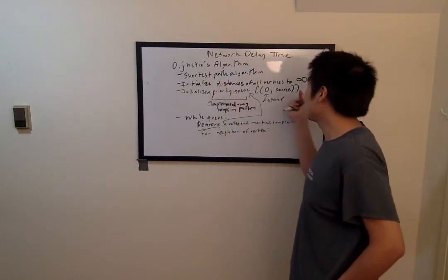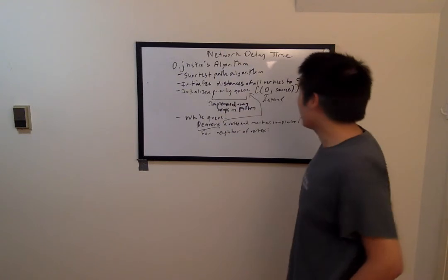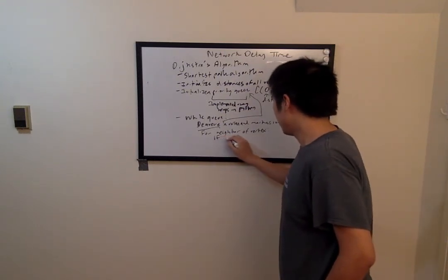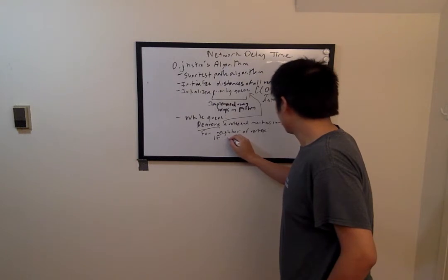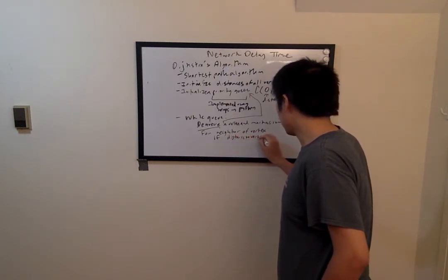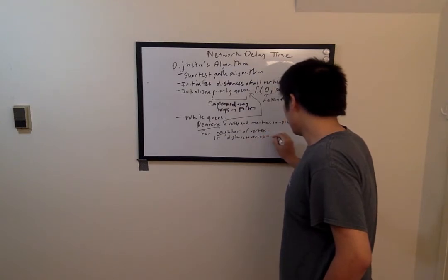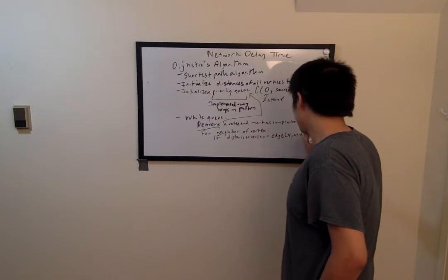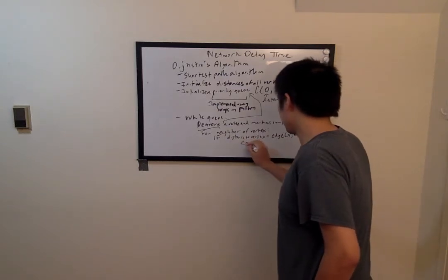Remember that all distances are initially marked to infinity, so the updates at the beginning will be relatively quick. So we're going to do if distance to vertex plus edge weight from vertex to neighbor is less than the neighbor's weight, then we'll update the neighbor distance.